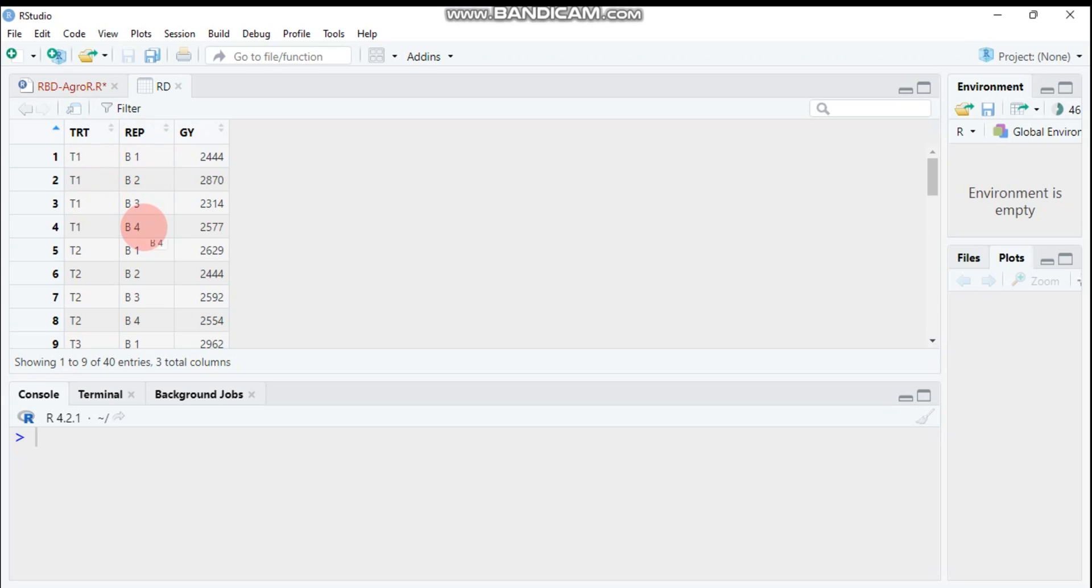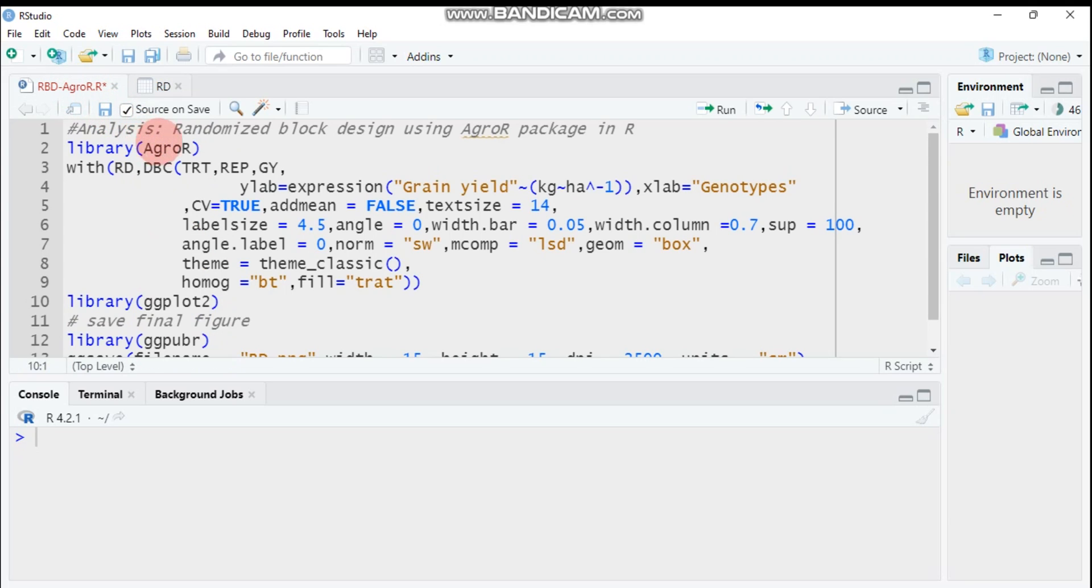Four replications of block, then again followed by the response variable GY, which stands for grain yield. In order to compute the randomized complete block design, you have to incorporate the package.